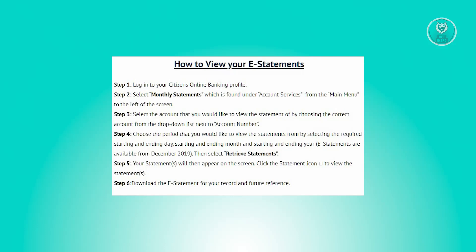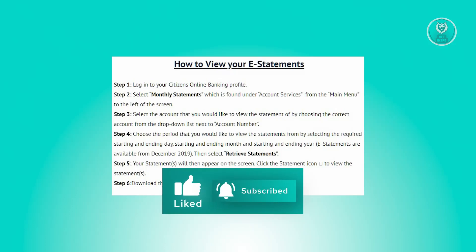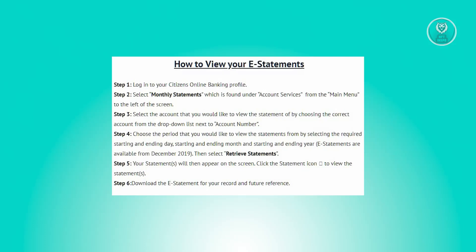Now from there, from the drop-down list next to account numbers, select the specific account for which you wish to view the statements. Next, specify the desired time frame for these statements by indicating the starting and ending day, month, and year.